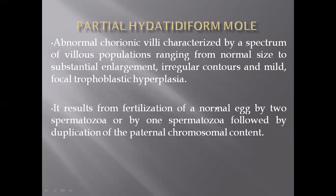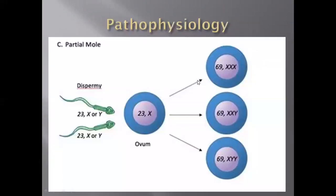The pathogenesis of the partial hydatidiform mole involves fertilization of a normal egg containing the haploid number of chromosomes by two spermatozoa, causing the formation of a triploid — this occurs in 90% of cases. As shown in the picture, a normal ovum fertilized by two spermatozoa leads to triploid formation.